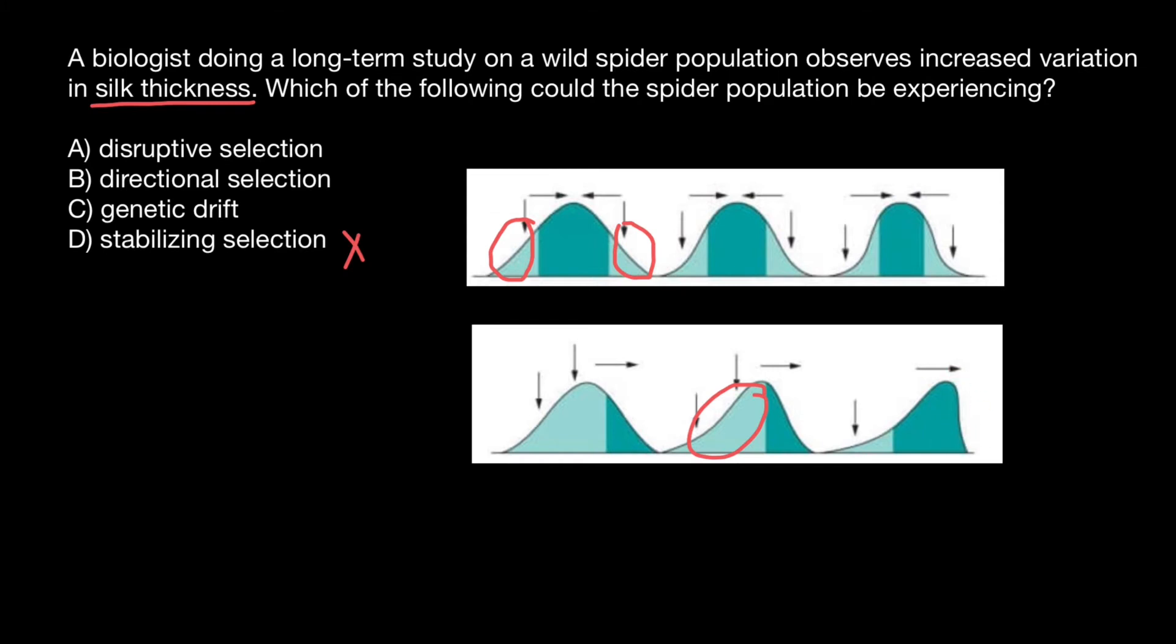Now the question: are we going to observe increased variation in silk thickness? In this case, actually no. We are going to see the shift of the phenotype, but we are not going to see that variation would increase. So this is going to be a wrong answer.